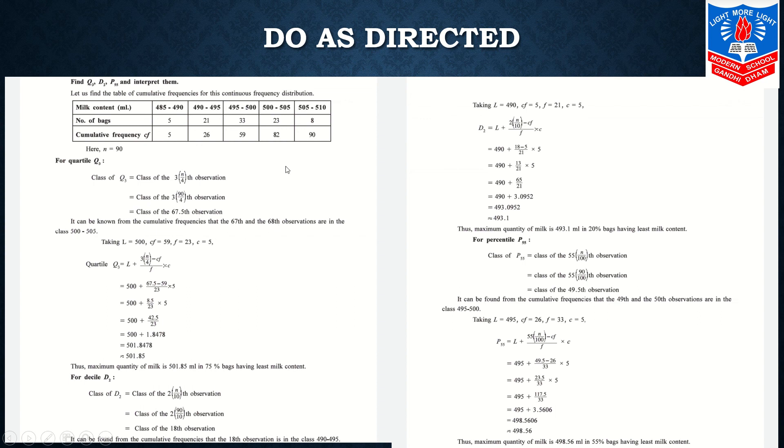67.5th observation, looking into the column of CFI, comes at 82. So our class will be 500 to 505. It is written in detail: it can be known from the cumulative frequencies that the 67th and 68th observations are in the class 500 to 505.